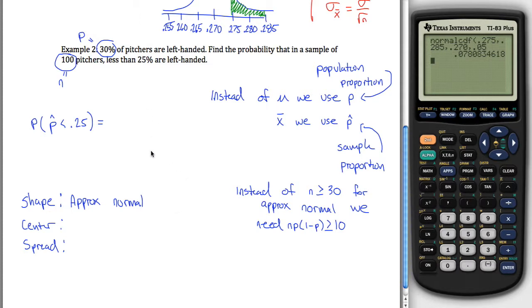So a whole new criteria here. We used to need n to be greater than or equal to 30. Now we need this product to be greater than or equal to 10. So we should probably check that.